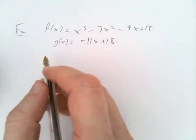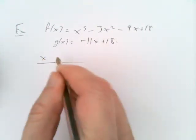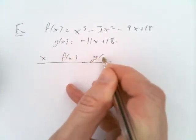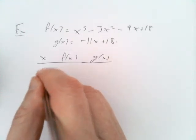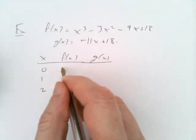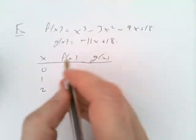And then g of x is minus 11x plus 18. If you check certain values, let's pick x values and find f of x and g of x. We plug in 0, 1, 2.